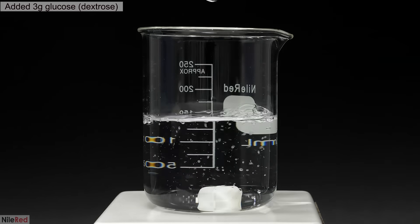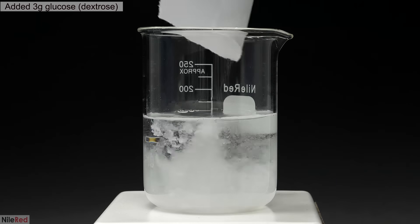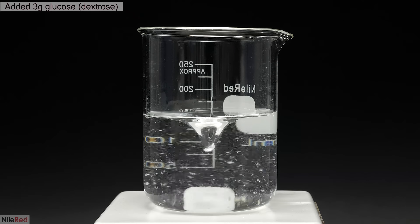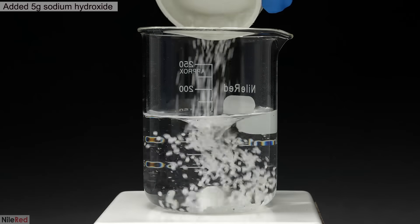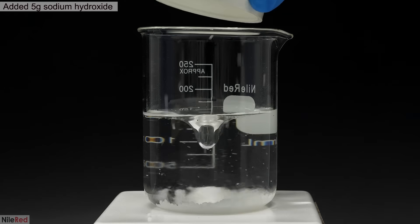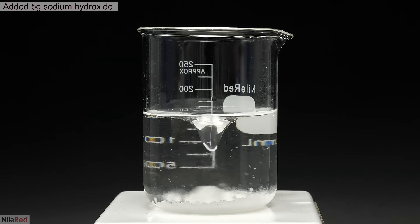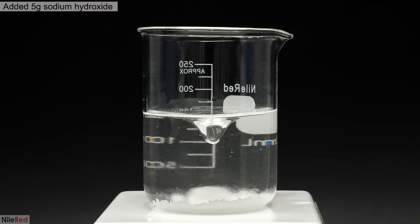To start things off, I added about 150 mils of distilled water followed by 3 grams of the glucose. Then to this solution, I added 5 grams of the sodium hydroxide drain cleaner and I stirred it until it all dissolved. When it was done, I temporarily placed it on the side and moved on to making the indigo carmine solution.